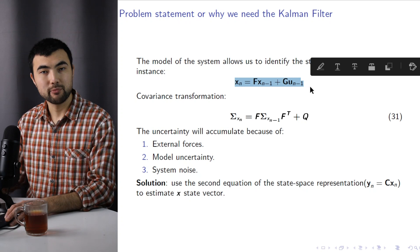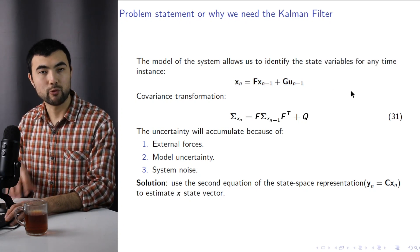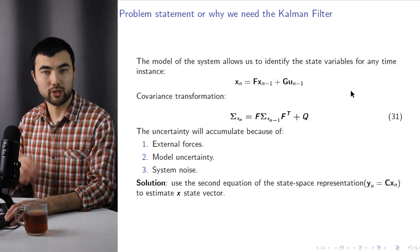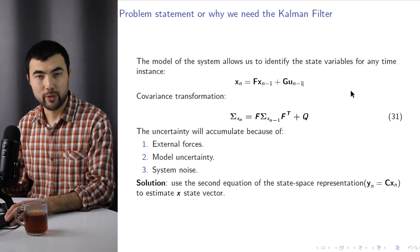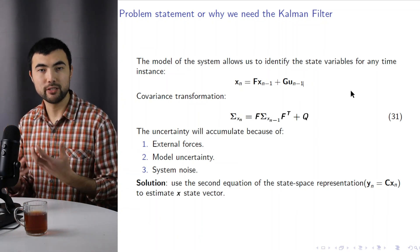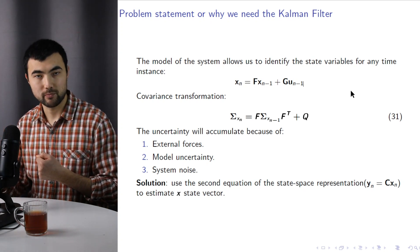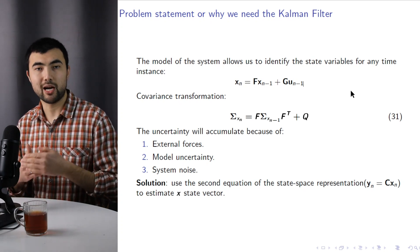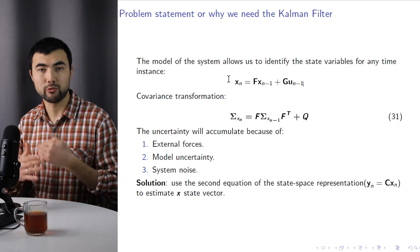The state space equation allows us to identify the state vector for any time instance. In other words, if we know the input variables, we can predict the state vector for the far future. However, dealing with real physical systems is not as easy as dealing with these equations, because in every iteration our prediction of the state variables will deteriorate.